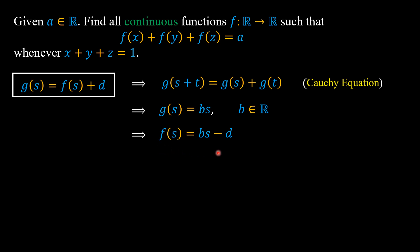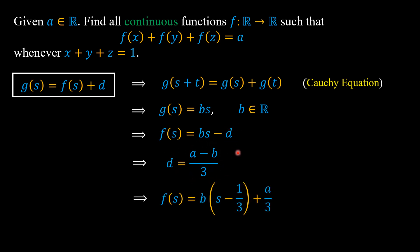By substituting this f(s) into the original functional equation, we find d = (a - b) / 3. Replacing d with (a - b) / 3, we get f(s) = b·(s - 1/3) + a/3.